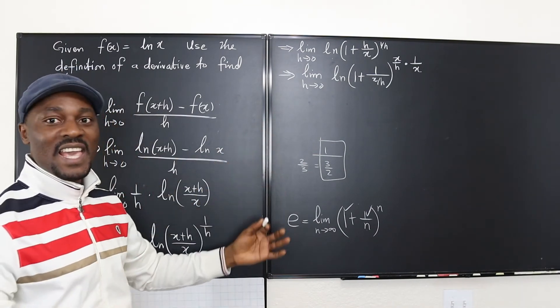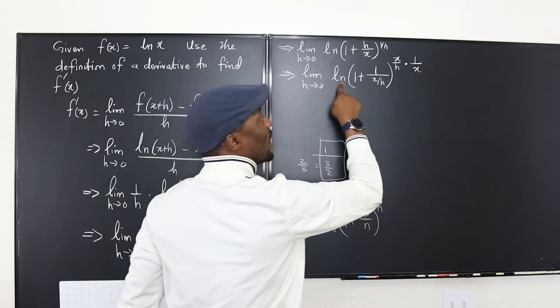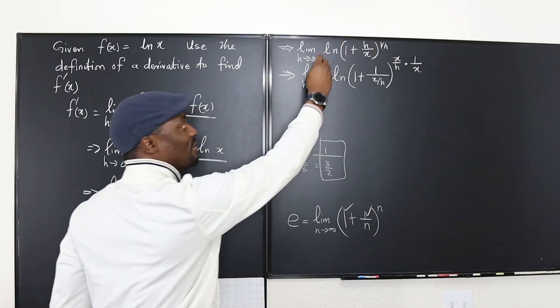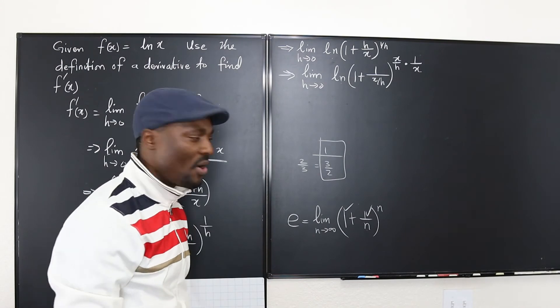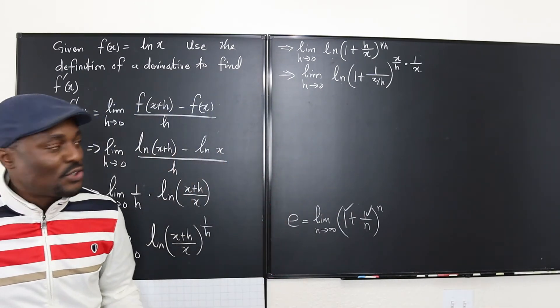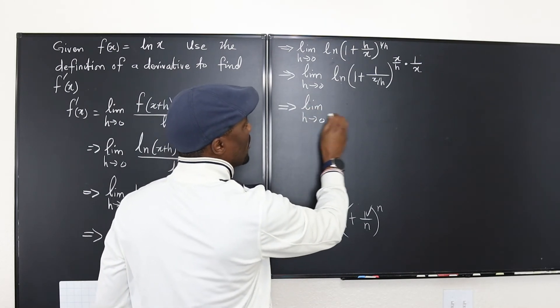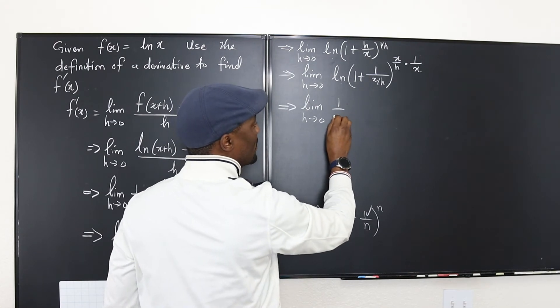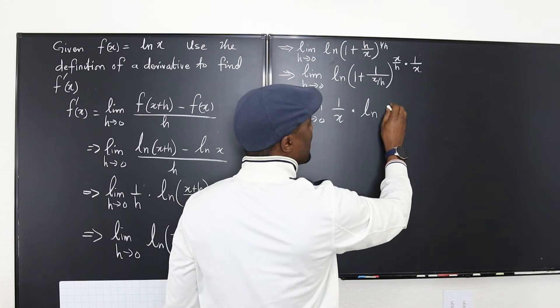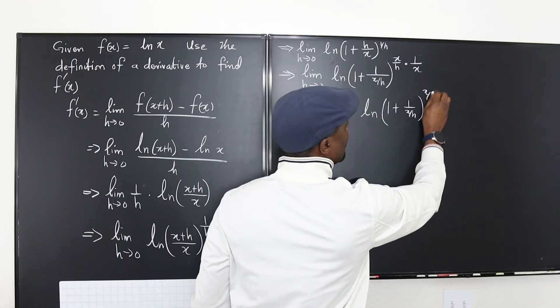So the next thing to do is take this guy. Because this guy doesn't have anything to do with h, follow the rule for natural log. The log rule, an exponent can be taken to the back. Just take all the way to the back. Let's do it. So right now what I have is the limit as h goes to 0. When this comes all the way back it becomes 1 over x multiplied by natural log of 1 plus 1 over x over h to the x over h.